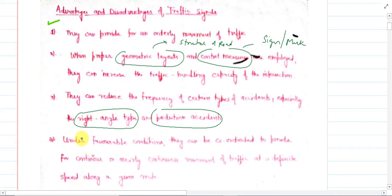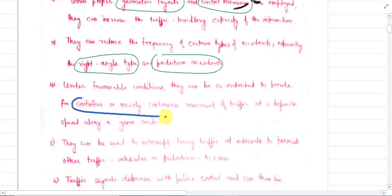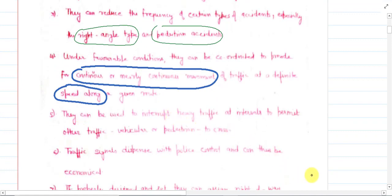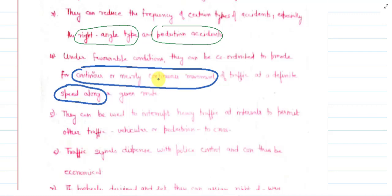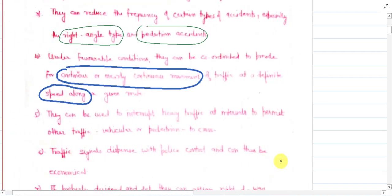The fourth point says that under favorable conditions, signals can be coordinated to provide for continuous or nearly continuous movement. This can be achieved only at a certain optimum speed — you cannot achieve continuous flow at very high or very low speeds. This optimum speed depends upon the size of the intersection as well as the number of vehicles — the incoming flow inside the intersection.